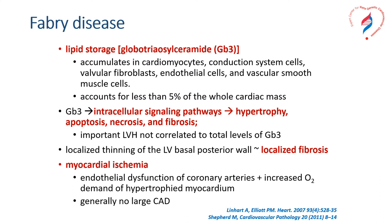At the level of the heart, several changes were described. First, there is the lipid storage. Globotriaosylceramide can accumulate in the cardiomyocytes as well as in the conduction system cells, the valvular fibroblasts, endothelial cells, and vascular smooth muscle cells. However, they were proven to account for less than 5% of the whole cardiac mass, meaning they lead to hypertrophy as well as to fibrosis also by triggering intracellular signaling pathways.